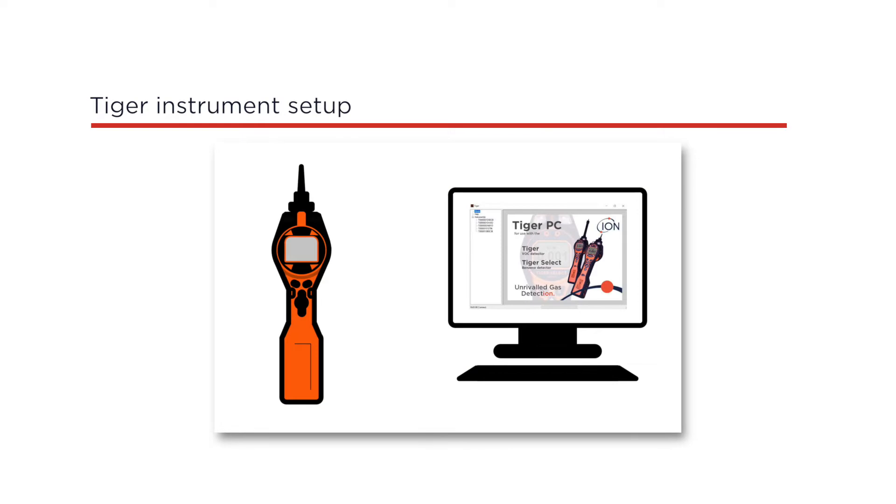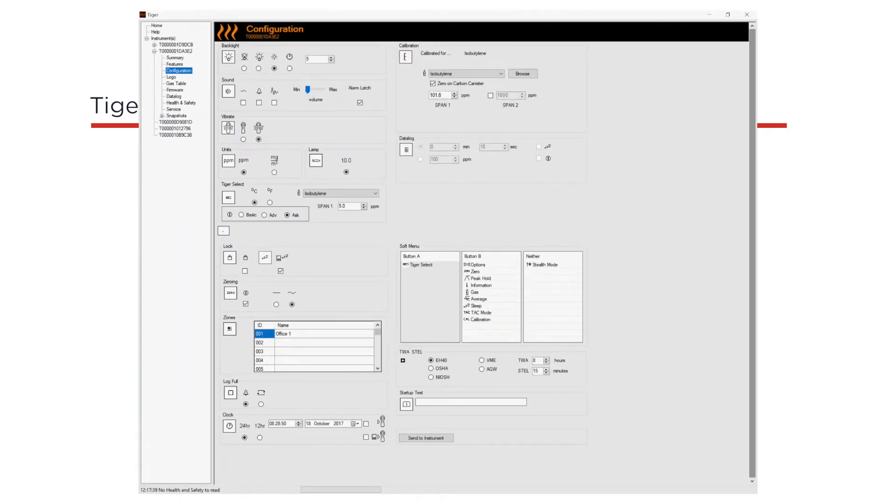Open the TIGER software and connect your TIGER instrument via USB. Go to the configuration page. In the calibration section, set span 1 to the gas level on the gas bottle. Select the zero on carbon canister option and ensure span 2 is unselected. Now press the send to instrument button.